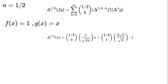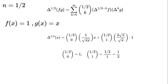Delta to the power of 1 over 2 times x equals (1 over 2 choose 0) times (1 over the square root of pi times x) times x plus (1 over 2 choose 1) times (2 times the square root of x over the square root of pi) times 1. The binomial coefficients are: 1 over 2 choose 0 equals 1, and 1 over 2 choose 1 equals 1 over 2.